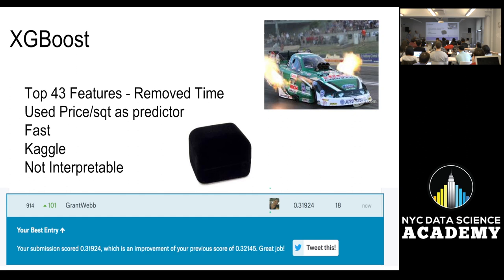So time to get boosted. XGBoost. Well this is what everybody does. It's a big black box that we really didn't try to solve. But you know, underneath that is going to be a nice diamond. So we did the top 43 features. We removed time because it was worse on our Kegel score. We used price per square foot as a predictor. It's fast. It's nice for Kegel. However, it's not very interpretable. So you know, it is what it is. And we got a score of 31.3, 0.32, close.